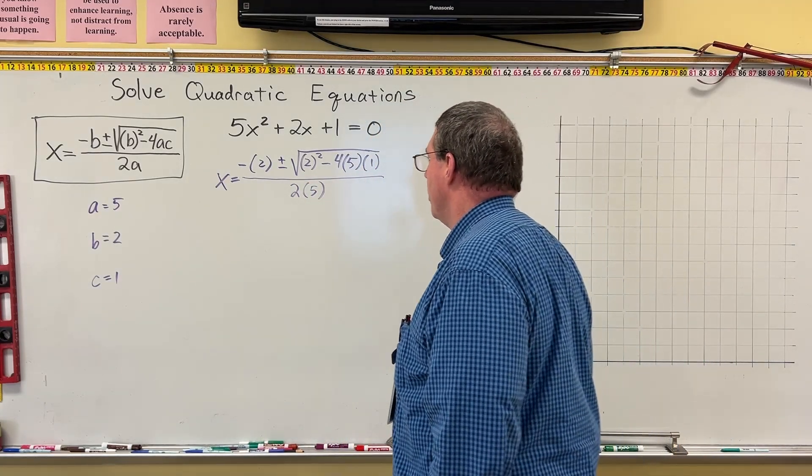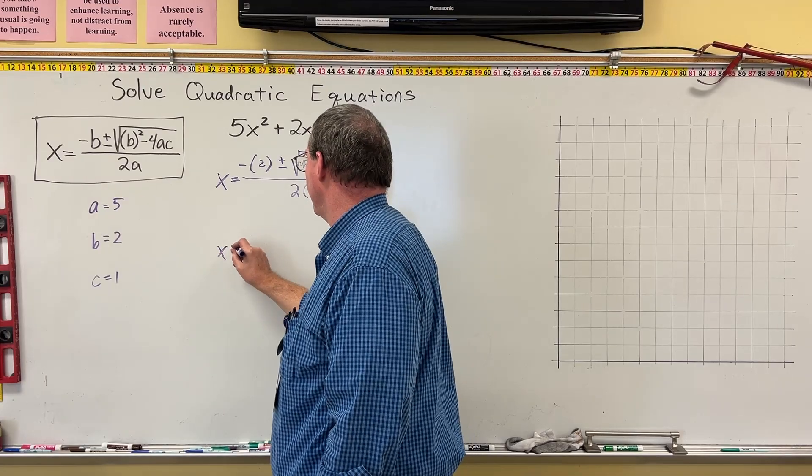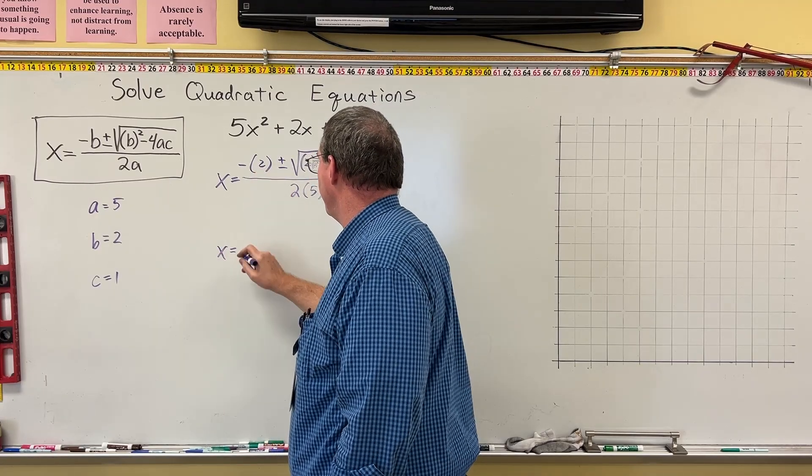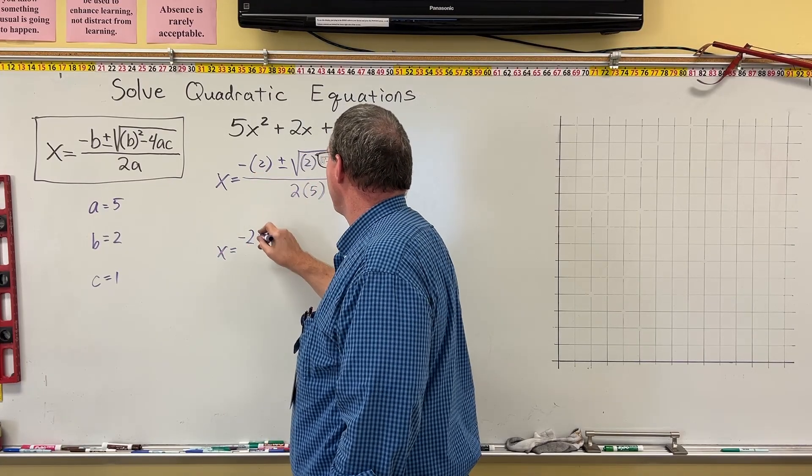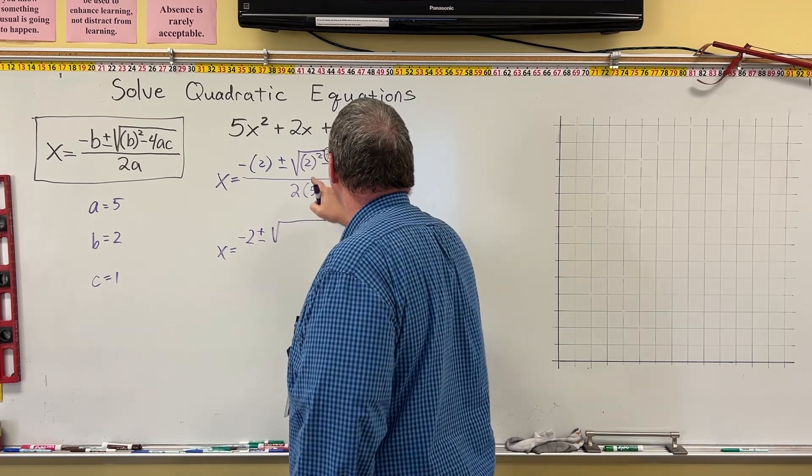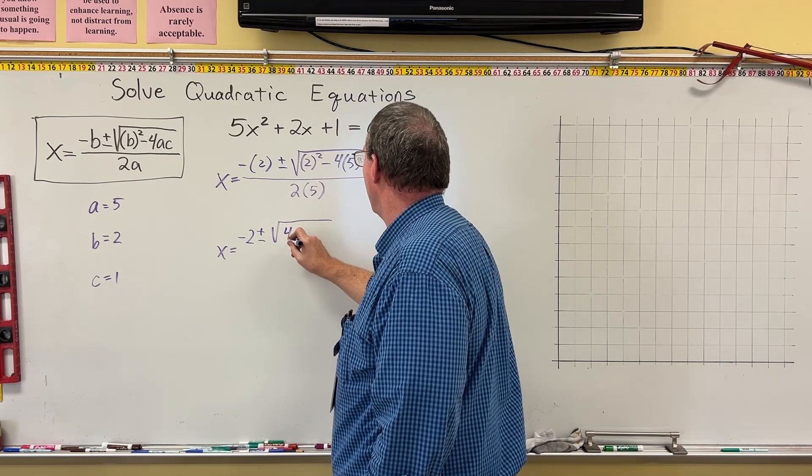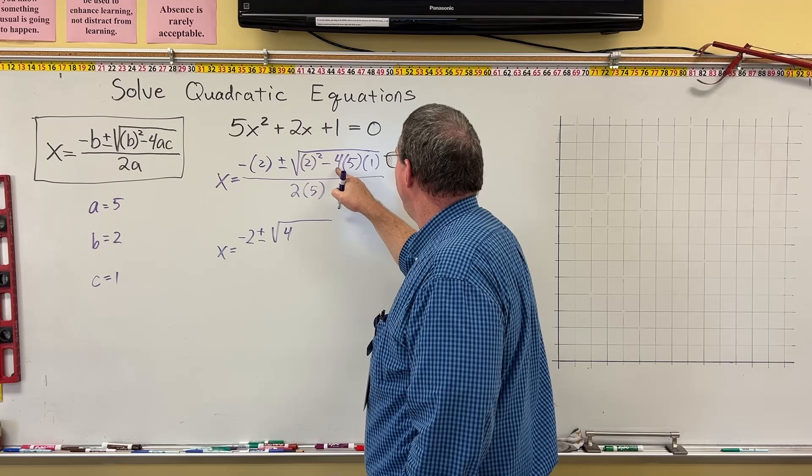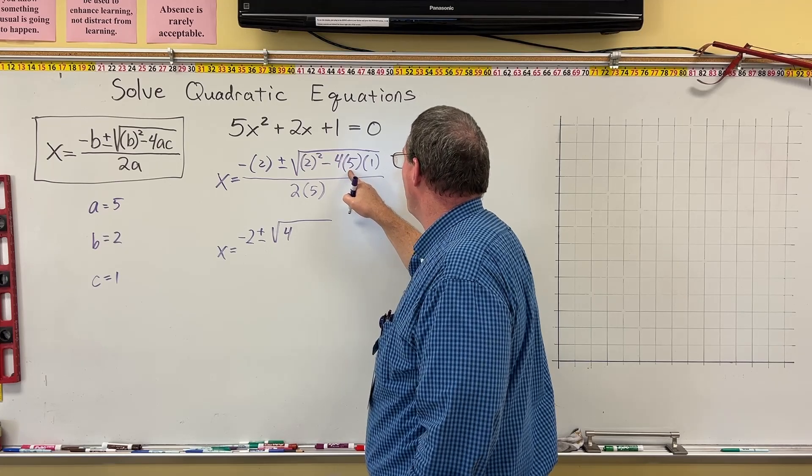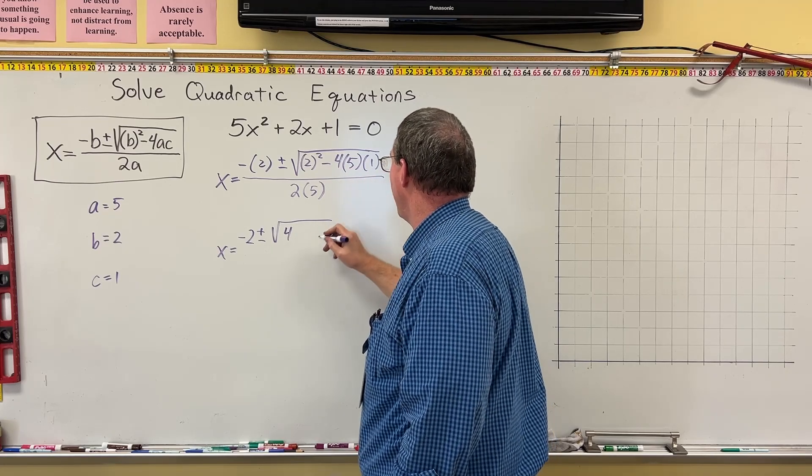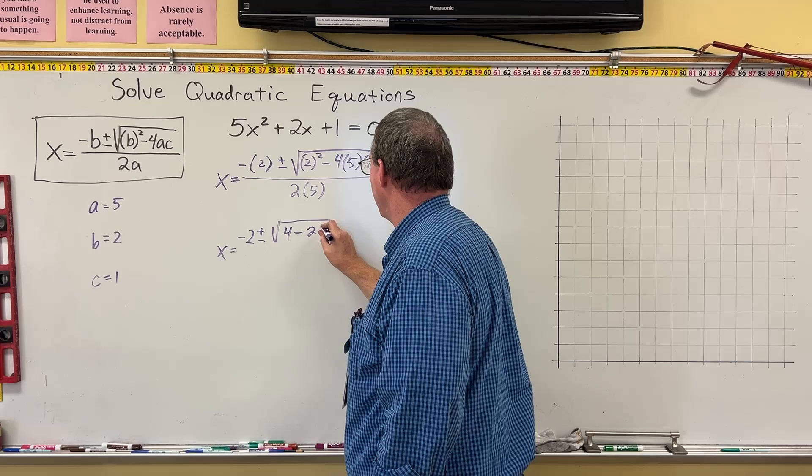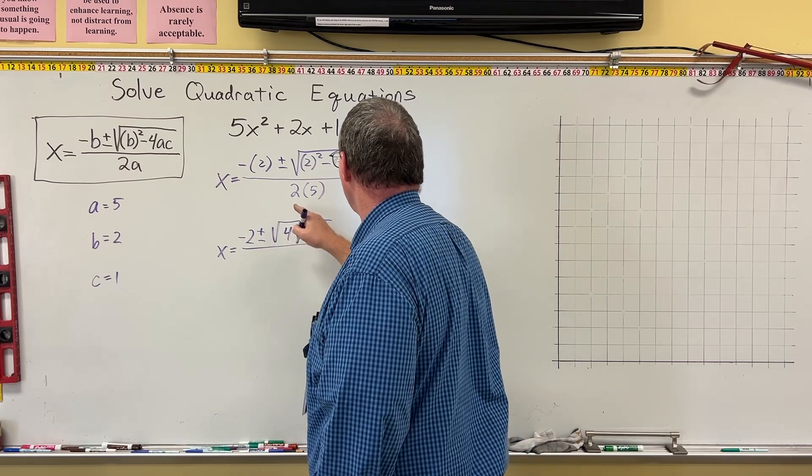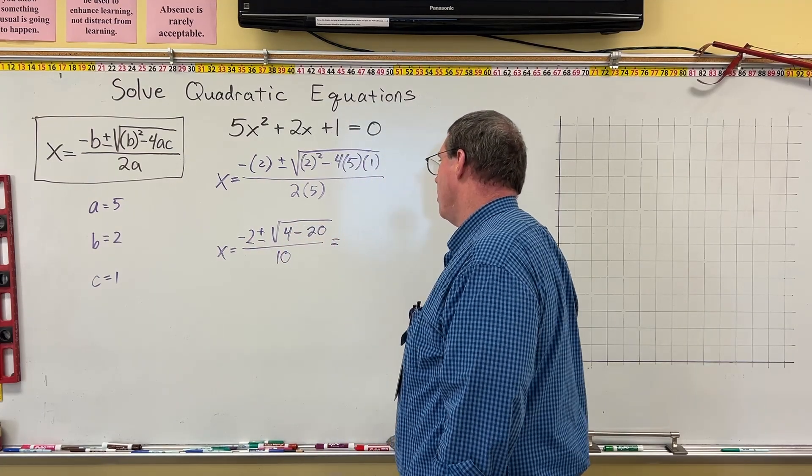And so now I just need to clean it up, do some arithmetic. x is equal to negative 2 plus or minus square root: 2 squared is 4, and then negative 4 times 5 is negative 20. Negative 20 times 1 is negative 20, so it's 4 minus 20 over 2 times 5 is 10.